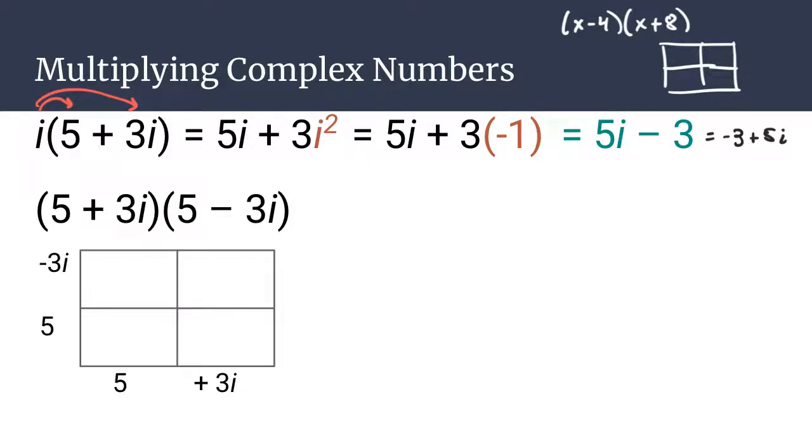So here we have our generic rectangle where you have 5 plus 3i across the bottom and 5 minus 3i across the top. So as you do your multiplication, 5 times 5 is equal to 25. And then you're going to have your 5 times 3i, which is 15i down here. And then in the top left, you have 5 times negative 3i, so negative 15i. And then you've got to be careful with this one where you have 3i times negative 3i in this scenario. And that is going to become negative 9i squared.